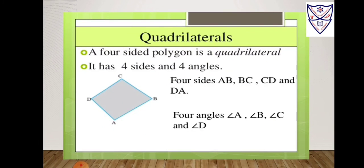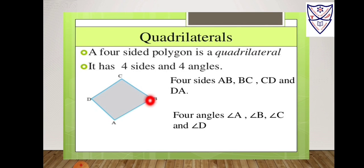Quadrilateral. What is a quadrilateral? A quadrilateral is a type of polygon with four sides. A four-sided polygon is a quadrilateral — it has four sides and four angles. So here, which are the four sides? AB, BC, CD, and DA. The four angles are angle A, angle B, angle C, and angle D. So these are the four sides and angles.